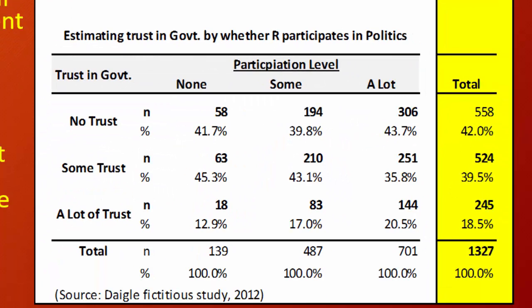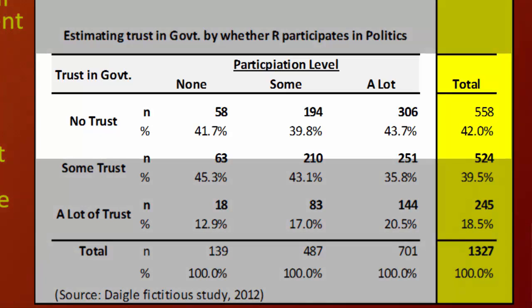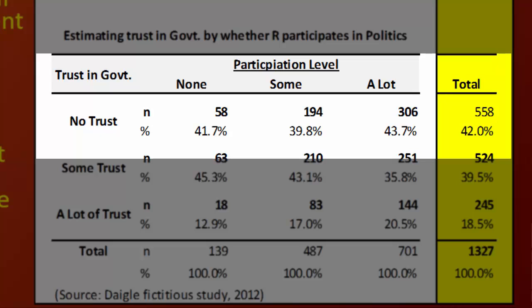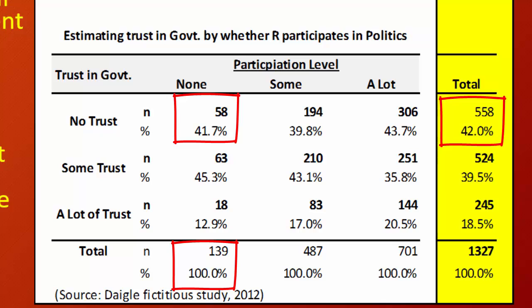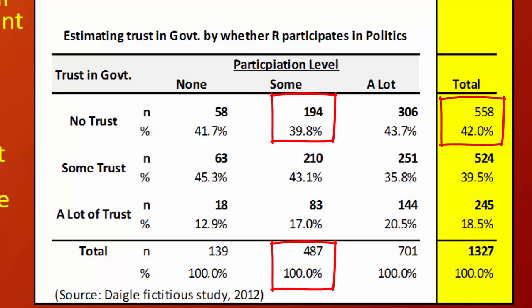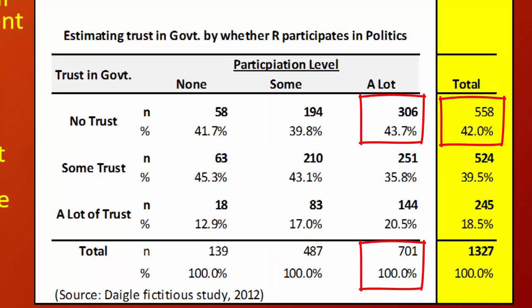In our table estimating trust in government by whether R participates in politics, our dependent variable's first category of no trust has 42% of observations. If the null hypothesis is true, we would expect 42% across the none, some, and a lot categories of the independent variable. That would be 42% of the 139 who don't participate, 42% of the 487 who participate some, and 42% of the 701 who participate a lot.